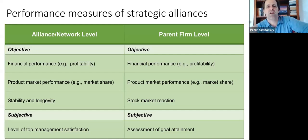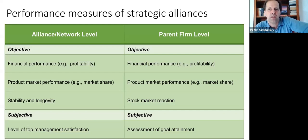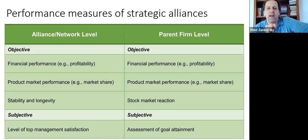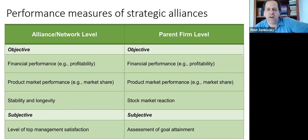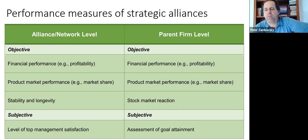To wrap up: performance is the ultimate goal of strategic alliances, but it's important to distinguish between levels — the actual alliance or joint venture level, the network level, and the parent firm level. There are not just objective hard-number measures of performance but also subjective ones, such as top management satisfaction or assessment of non-financial strategic goals. Objective measures include financial performance, innovation performance, market share, and for the parent firm, stock market performance and reaction.